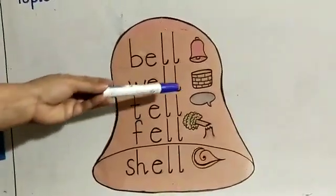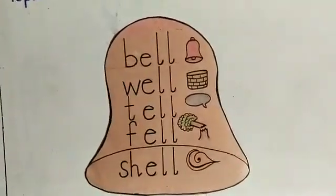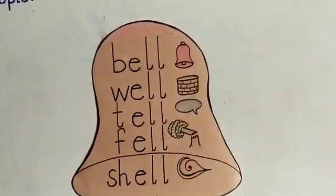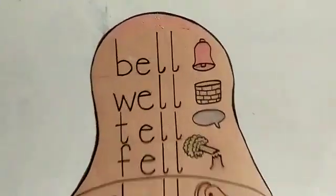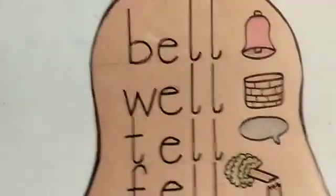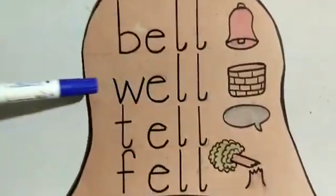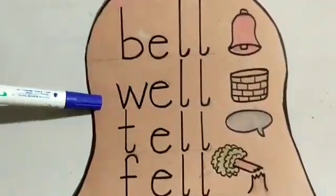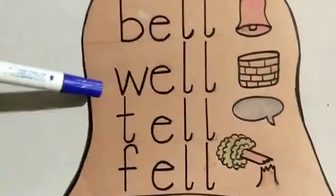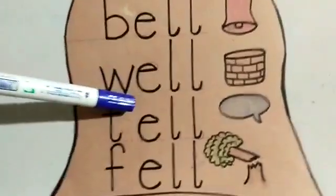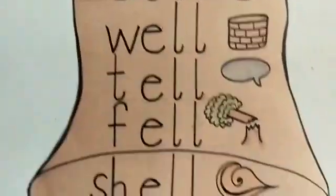Come to the next picture. What is this? This is a picture of well. And the starting letter of well is W. Wa-el: well.